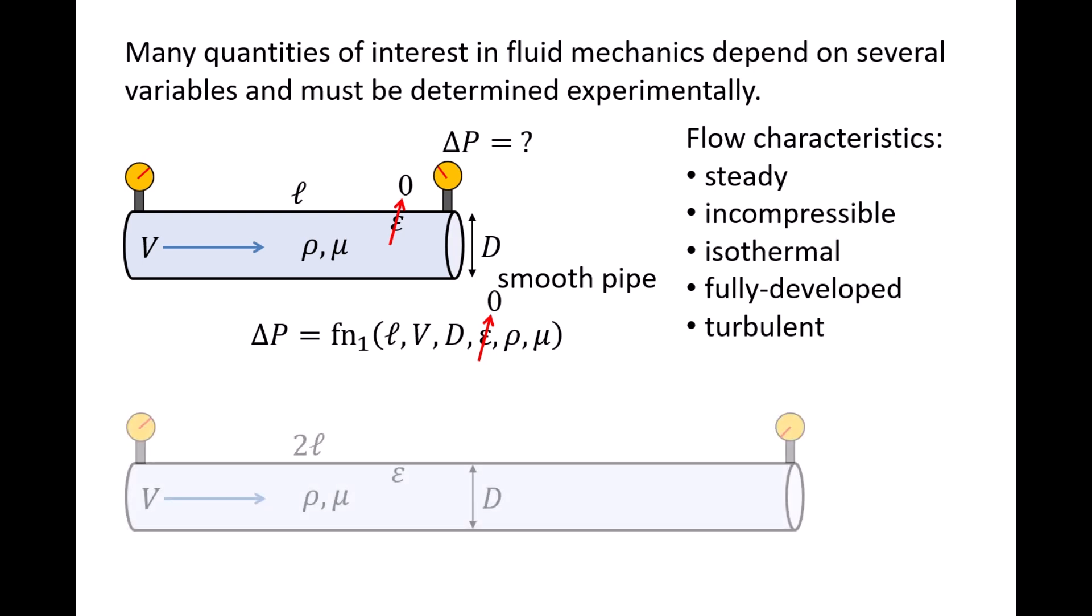For example, if we double the length of pipe, keeping all other variables the same, we would observe the pressure drop also would double. That is, the pressure drop is linearly proportional to the length.